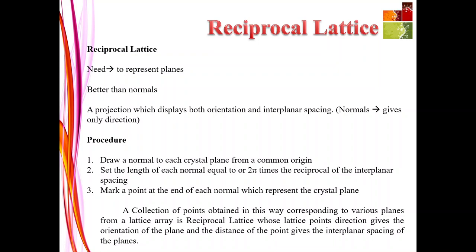How is this done? There is a procedure for mapping points in the reciprocal lattice. First, you draw a normal to each crystal plane from a common origin. Second, set the length of each normal equal to 2π times the reciprocal of the interplanar spacing. Third, mark a point at the end of each normal, which represents that crystal plane. The collection of points obtained in this way, corresponding to various planes, forms the reciprocal lattice — where the point direction gives the orientation of the plane and the distance of the point gives the interplanar spacing.